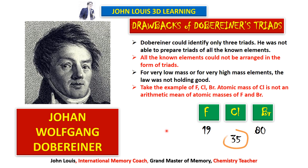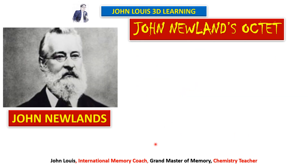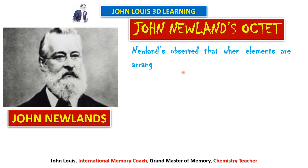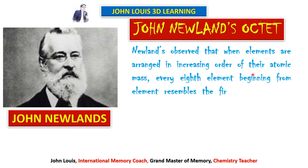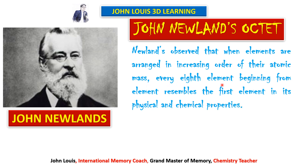Next came John Newlands. By the time he developed a new system there were 56 elements known. He arranged all 56 elements in the increasing order of their atomic mass and observed that every eighth element, beginning from any element, resembles the first element in its physical and chemical properties. That is why it is known as Newlands' Octave — every eighth element found to have similar properties.